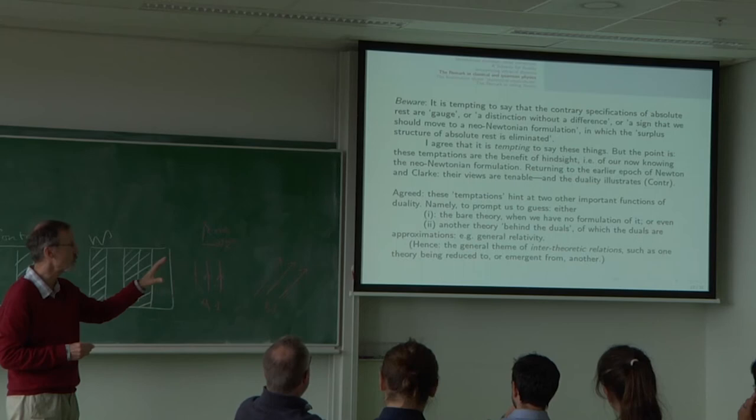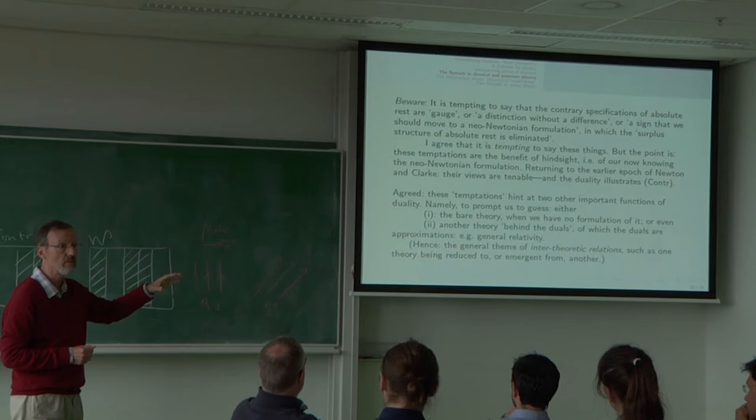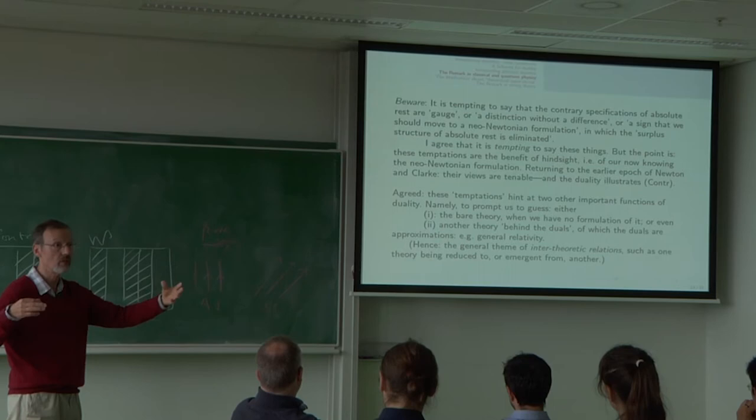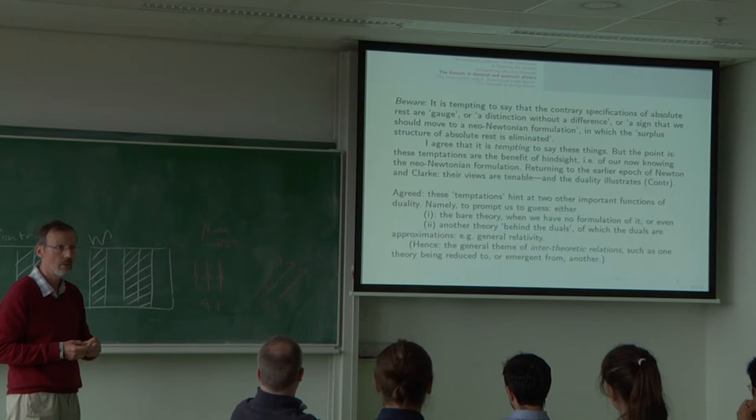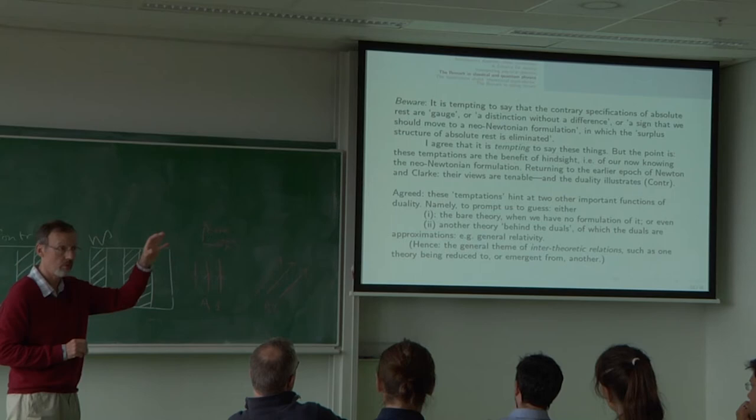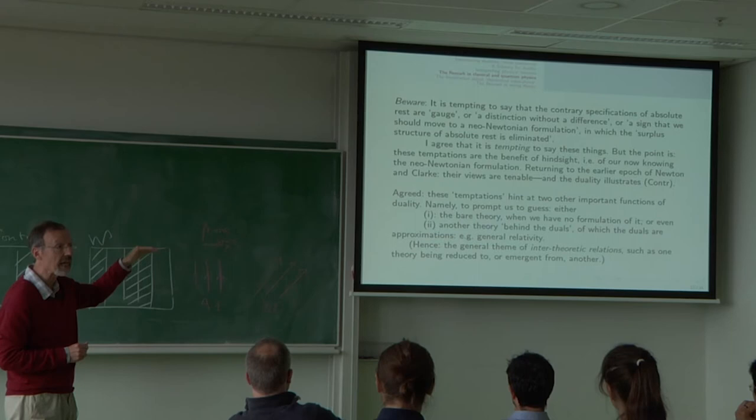And I agree that it is tempting to say all that, but my point is that these temptations are the benefit of hindsight. They are reflecting our now knowing how to write down space-time theories like that. If you go back to the time of Newton and Clarke, the view was tenable that we had on the previous slide. Roughly, Alice advocates, Bob advocates, they speak to one another, they have the impression that they disagree with one another, they are frustrated because they realize they cannot resolve their differences by an experiment. We would call it, in philosophy, under-determination of theory by data. All possible data will not resolve the contradiction.